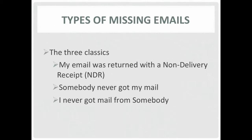Troubleshooting email typically involves looking for lost or missing emails. The most common type is where the sender receives a non-delivery receipt or NDR. The NDR is an automated message informing the sender that their email was not delivered. The next common case is where the sender reports a message was not delivered but they did not receive an NDR — it just went missing. And the last case is where the recipient reports a message they expected was not delivered but the sender never received an NDR.